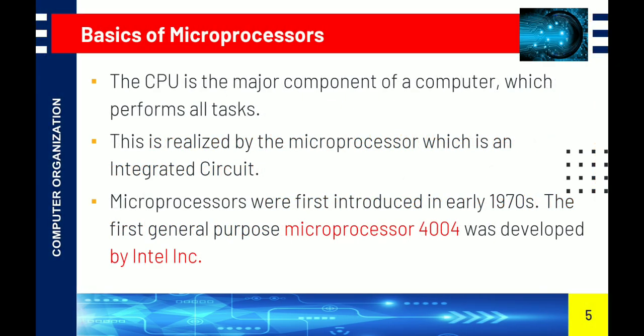The CPU is the major component of a computer which performs all tasks. The central processing unit, or CPU, is simply the processor. The CPU is realized by the microprocessor, which is an integrated circuit.